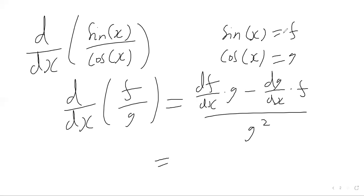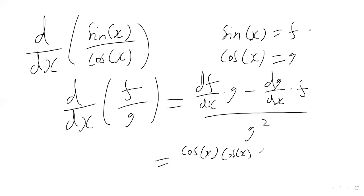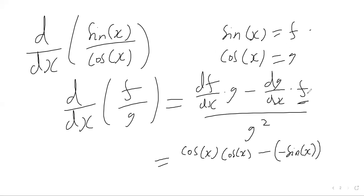In our case, differentiating f — which is sine — gives us cos, so we have cos of x multiplied by g, which is cos again. Then we subtract: the derivative of g, which is cos, gives us negative sine of x. We multiply that by the f function, which is sine, so we multiply by sine again.